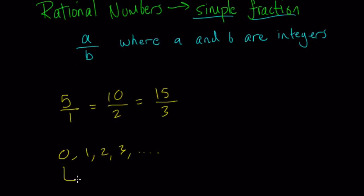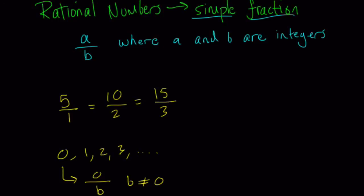Any whole number is rational. Any counting number like 0, 1, 2, 3, and so forth, are all rational. They can all be written as fractions. And for 0, remember 0 over b, where b is any non-zero integer.